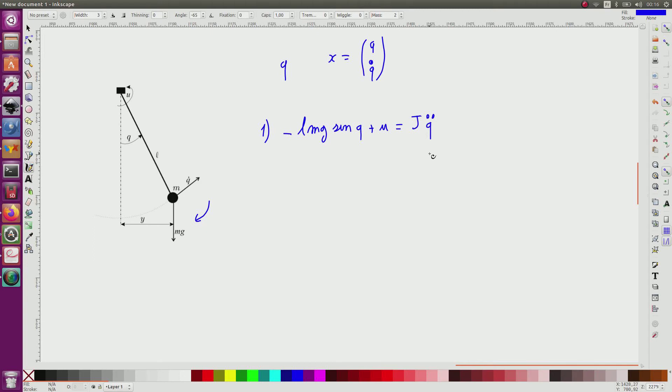So in our example, since all the mass is at the extremity of the rod, we have J equals M times L squared. So as a consequence, if I isolate this one, I will have Q dot dot equal to U minus LMg sin Q.